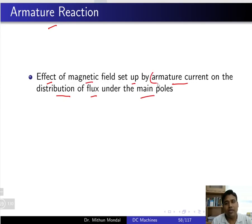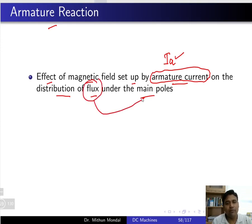Armature current will be established in the armature conductor. Due to this armature current, there will be some amount of flux produced and it will affect the main flux which is due to the main poles. This effect is known as armature reaction. To repeat: due to the armature current, there will be some flux which will affect the flux produced under the main pole — this is known as armature reaction.